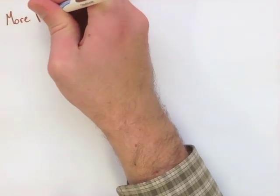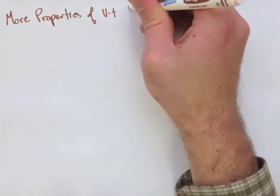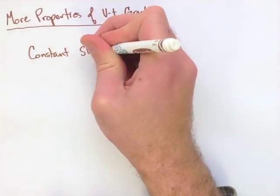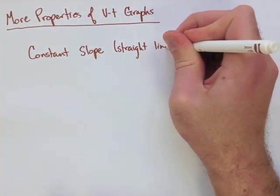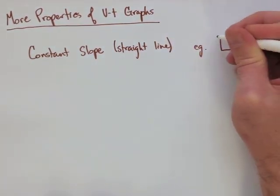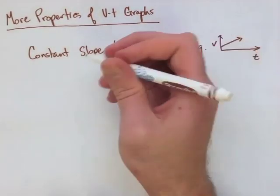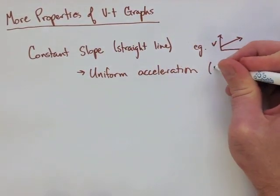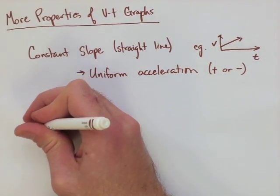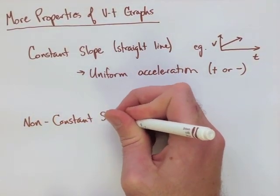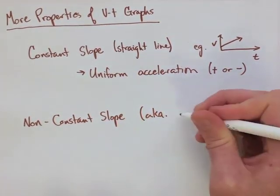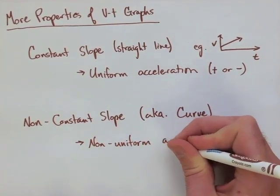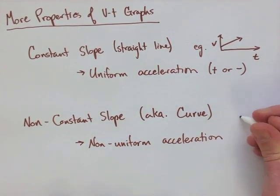Now the last thing we're going to look at is just a couple extra properties for a velocity time graph that are important for describing the motion of an object. If we have constant slope, or a straight line for our velocity time graph, this means we have uniform acceleration. The acceleration is staying the same throughout the motion, so it can be positive or negative. Now if we have a non-straight line, or non-constant slope, meaning like a curved line, this means we have non-uniform acceleration. So the acceleration is changing throughout the motion.